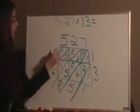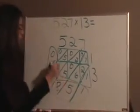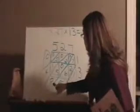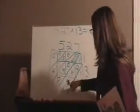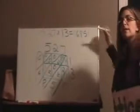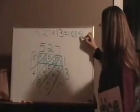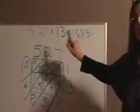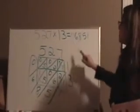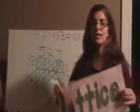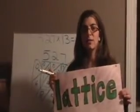You're done. Your answer is right here. So 527 times 13 is 0, 6, 8, 5, and 1. Put in your commas going from right to left. 1, 2, 3, comma. So 527 times 13 is equal to 6,851. That is how you do lattice multiplication.